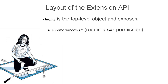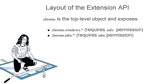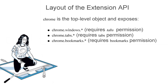Chrome.pageAction lets you enable and disable page actions. Chrome.windows lets you open, close, lookup, and update browser windows. It requires tabs permission in your manifest file — that's not a typo. Windows and tabs are so closely related they share a common permission. Chrome.tabs lets you perform the same actions on tabs. It also requires tabs permission. Chrome.bookmarks lets you read from and write to the user's bookmarks tree and requires bookmarks permission.